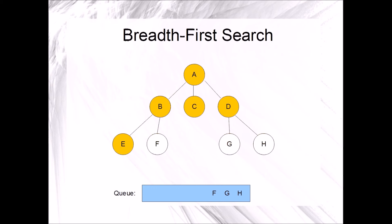Since the queue is not empty, we will have another repetition of the while loop. It begins by dequeuing F and marking it. Next, we will enqueue all adjacent unmarked vertices. There are none.